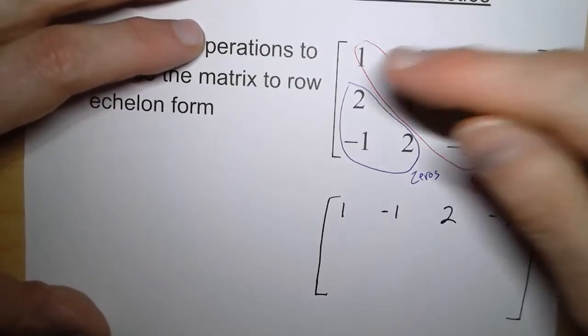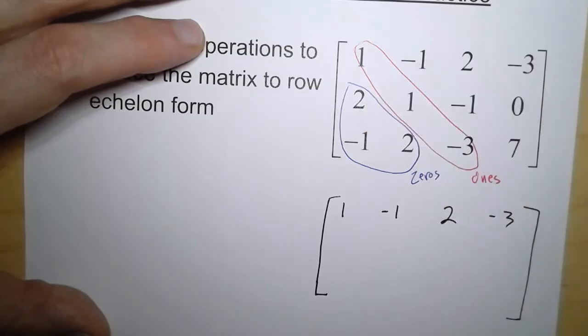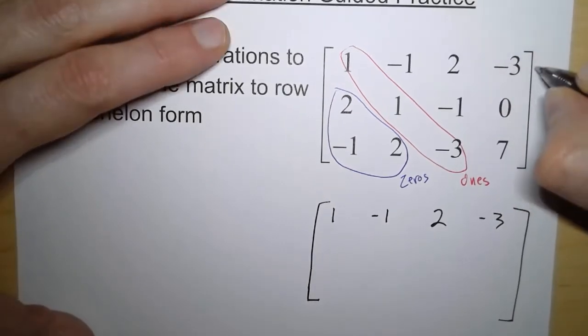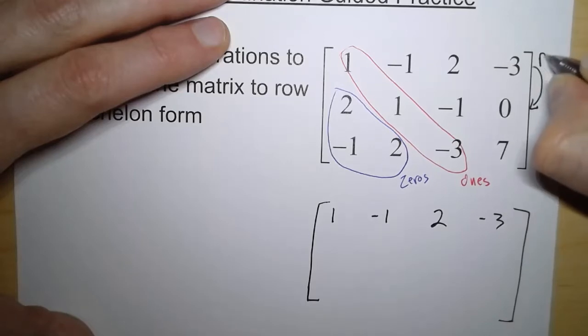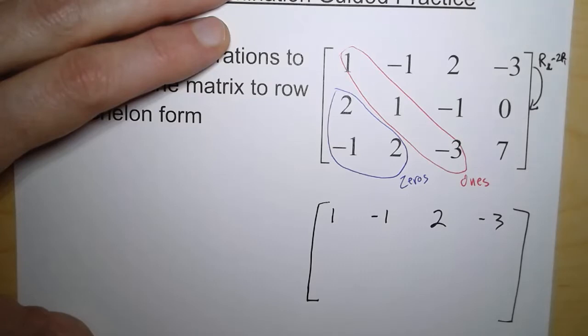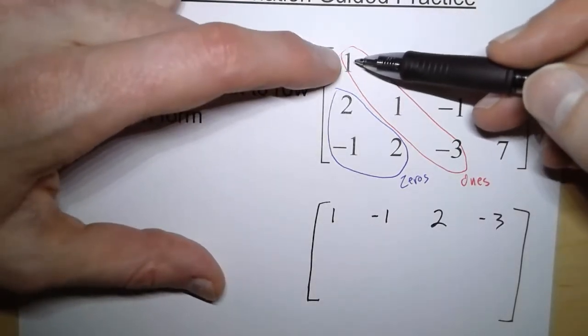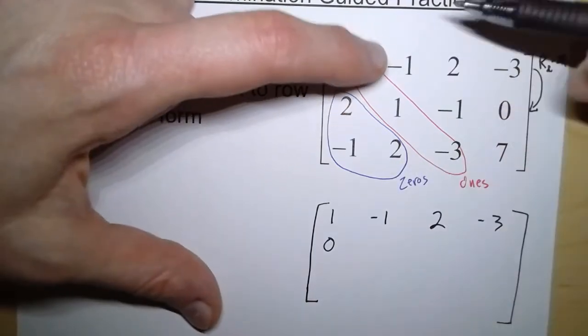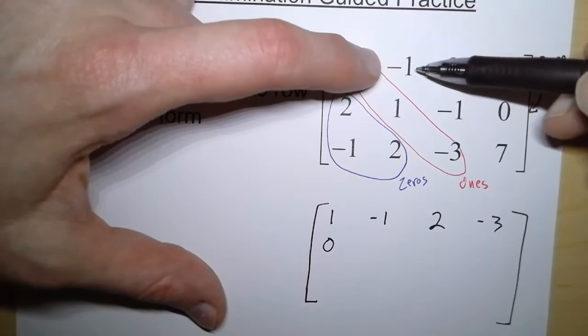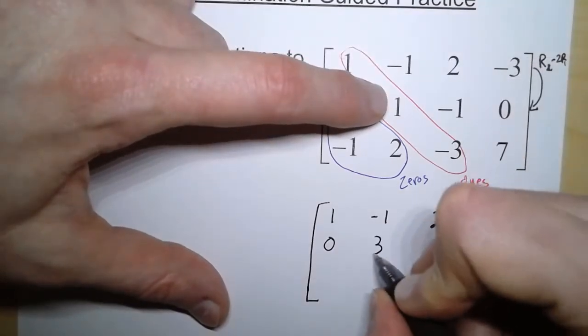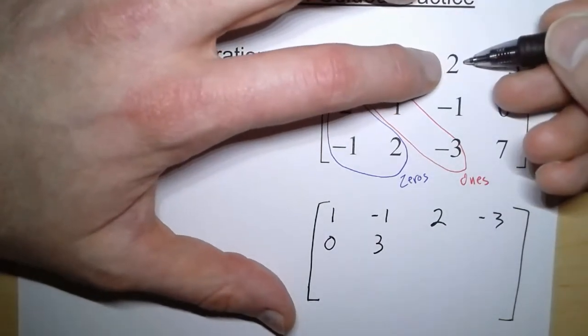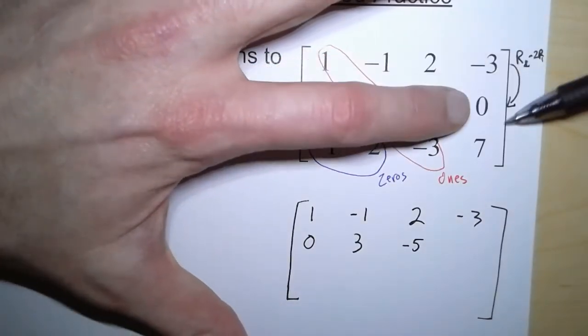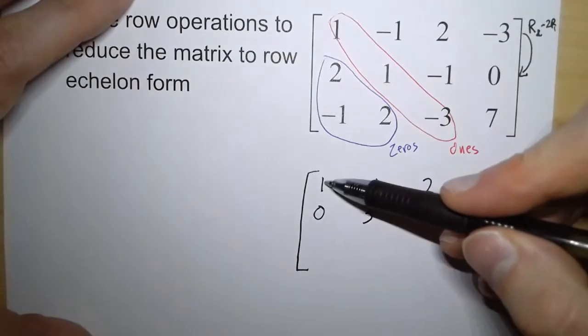Now, which row operation is going to turn this two into a zero? We're going to multiply row 1 times negative 2 and add it. So row 2 minus 2 row 1. We take 1 times negative 2 plus 2 is 0. Then we do that for each number. This times negative 2 is 2 plus 1 is 3. This times negative 2 is negative 4 plus negative 1 gives us negative 5. Negative 3 times negative 2 is 6 plus 0 is 6. So now we've got our 1 and our 0.